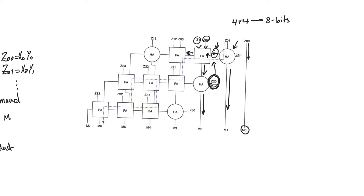In the next bit position we use two full adders and one half adder to produce the product bit, and we continue like this. At every bit position we use the minimum number of units possible — a half adder when sufficient, a full adder only when necessary.